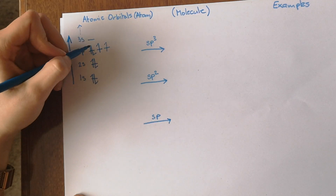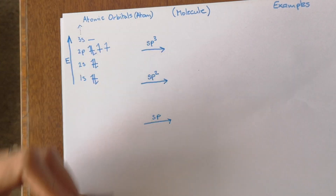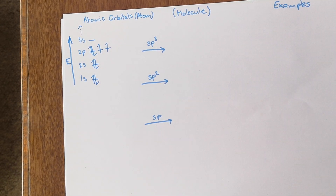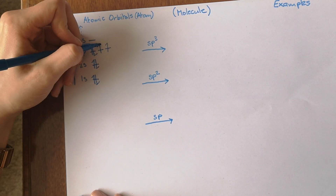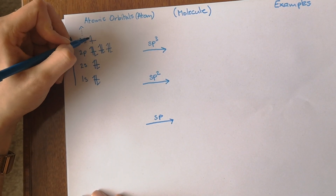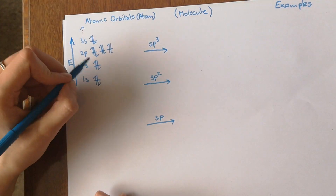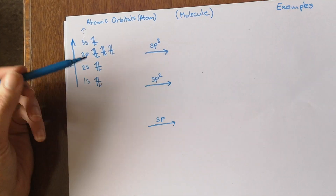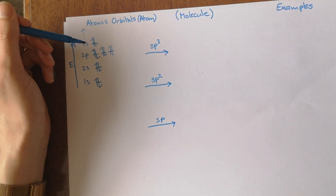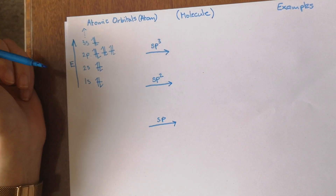It's really important when you do this that the arrow goes in the opposite direction — that's the correct notation for drawing the electronic configuration of an atom. Electrons always fill the lowest orbitals first, then fill orbitals of equal energy individually, and then start to form pairs.